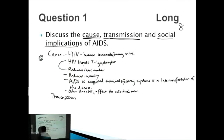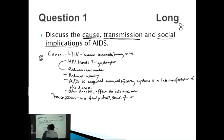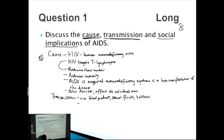Transmission occurs via blood products, sexual fluids, and tattoos. The main thing you can add is that using condoms during sexual activity can prevent transmission via that particular mode. Transmission through sexual activity can be prevented by using condoms.